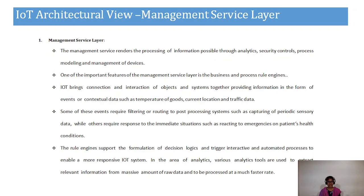The next layer is the management service layer, which processes information through security controls, analytics, modeling, and device management. The most important feature of this layer is its use of business and process rule engines. IoT brings the connection of objects and systems together, providing information on events, temperature of goods, current location, and traffic data. Some situations require an immediate response, such as reacting to emergencies in patient health, which is handled by this service layer.